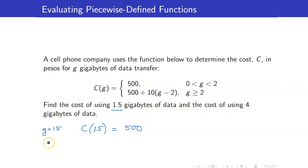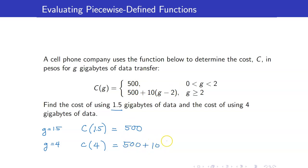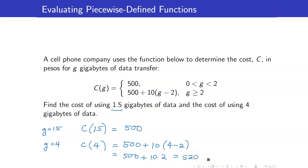For the cost of using 4 gigabytes of data, G is 4. The cost is 500 plus 10 times G minus 2 if G is greater than or equal to 2. Since 4 is greater than or equal to 2, we use this formula. That is 500 plus 10 times 4 minus 2, which equals 500 plus 10 times 2, giving us 520. Hence, the cost of using 4 gigabytes of data is 520 pesos.